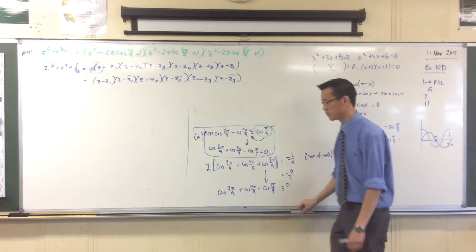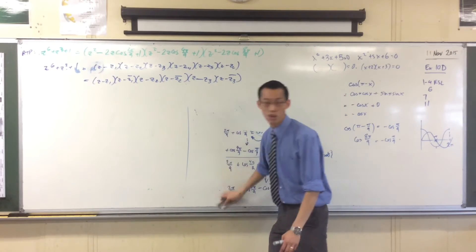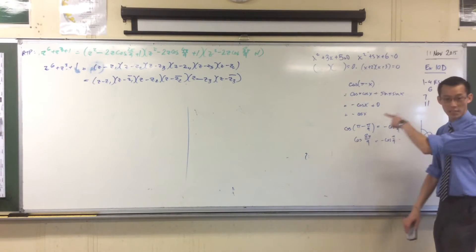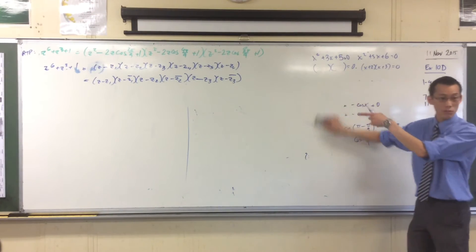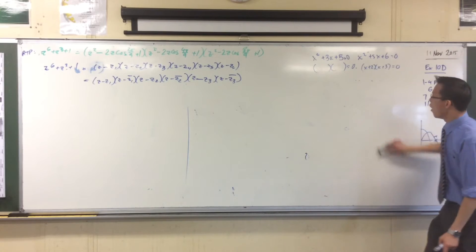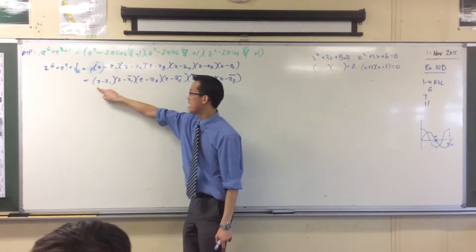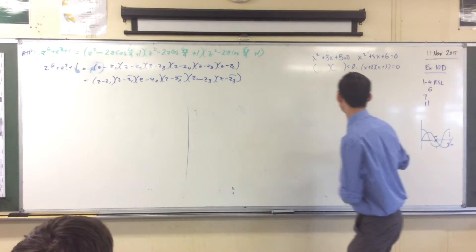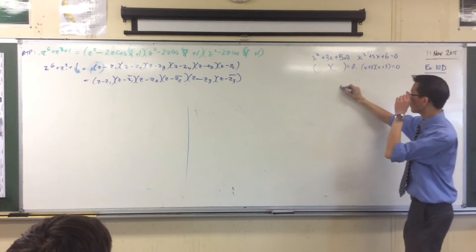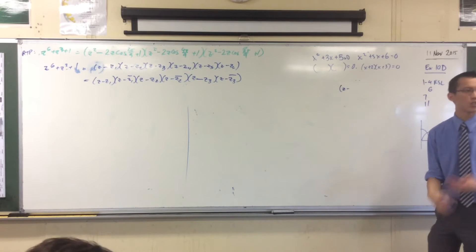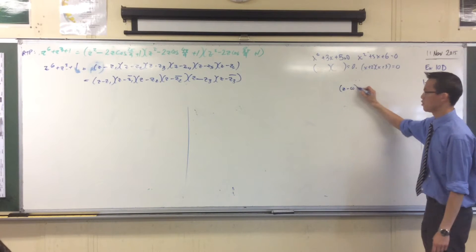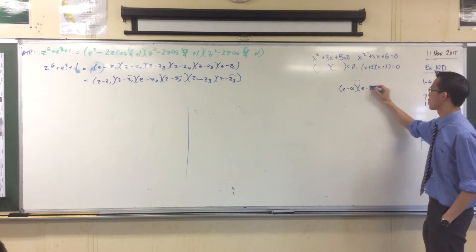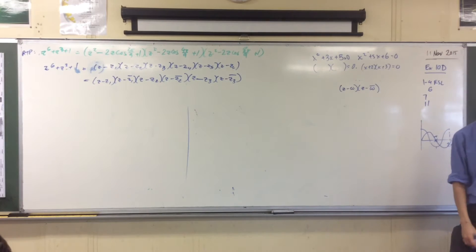Let's do some work over here on the right-hand side for a second — let's clear off some space. This is not going to form part of our main line of argument, but we're going to get a result, just like I did with the cosines, that I'm going to use to get to the next line. What happens when you go z take away something — z take away its conjugate? Let's have a go. Take any complex number you like, then multiply by its conjugate as well.